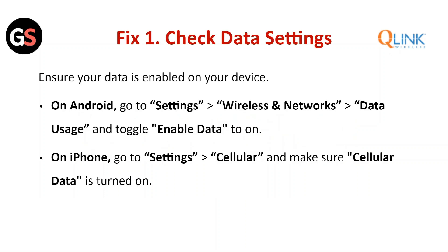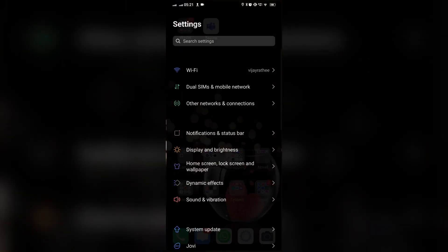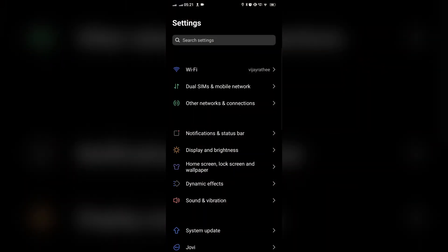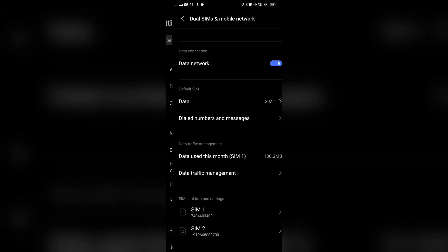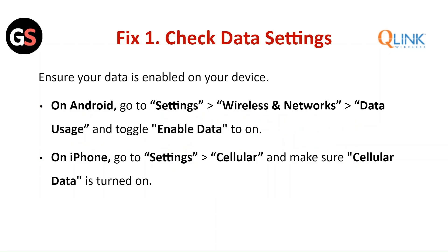Fix one: Check data settings. Ensure your data is enabled on your device. On Android, go to Settings, then Wireless and Connections, click on Data Usage, and toggle the data to on. On iPhone, go to Settings and Cellular, and make sure that Cellular Data is turned on.